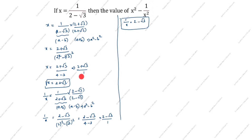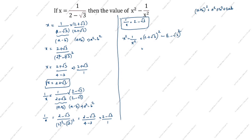Now we will find x squared minus 1 by x squared. We know x equals 2 plus root 3 and 1 by x equals 2 minus root 3. We will split this using the formula: a plus b whole squared equals a squared plus b squared plus 2ab, and a minus b whole squared equals a squared plus b squared minus 2ab.